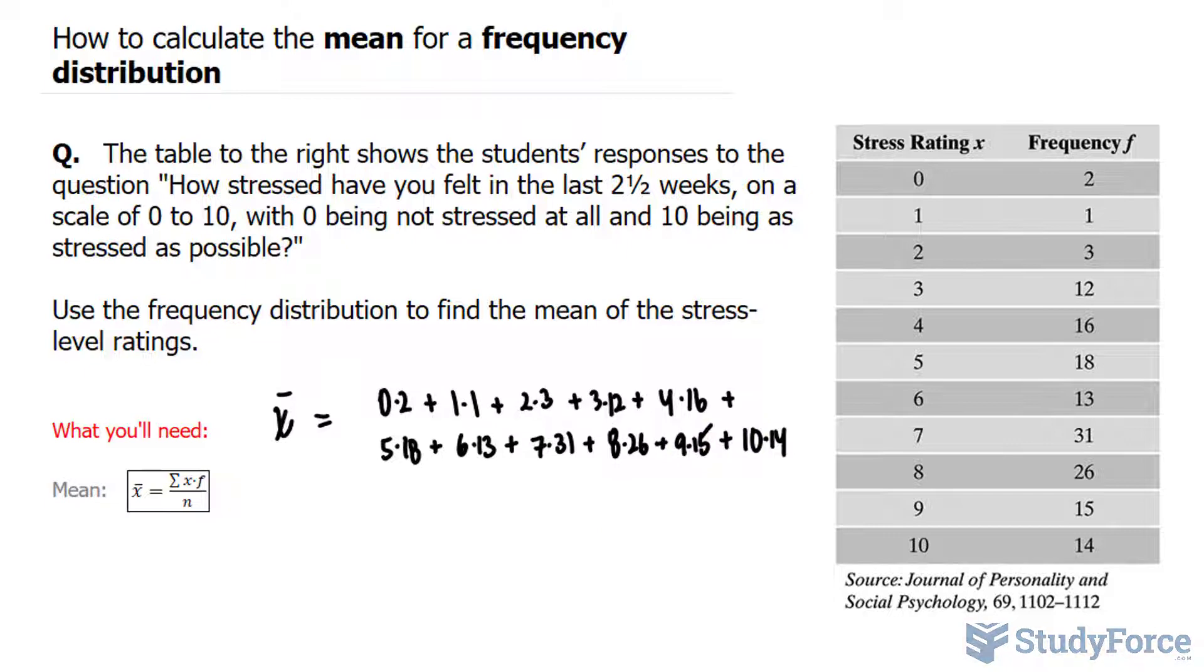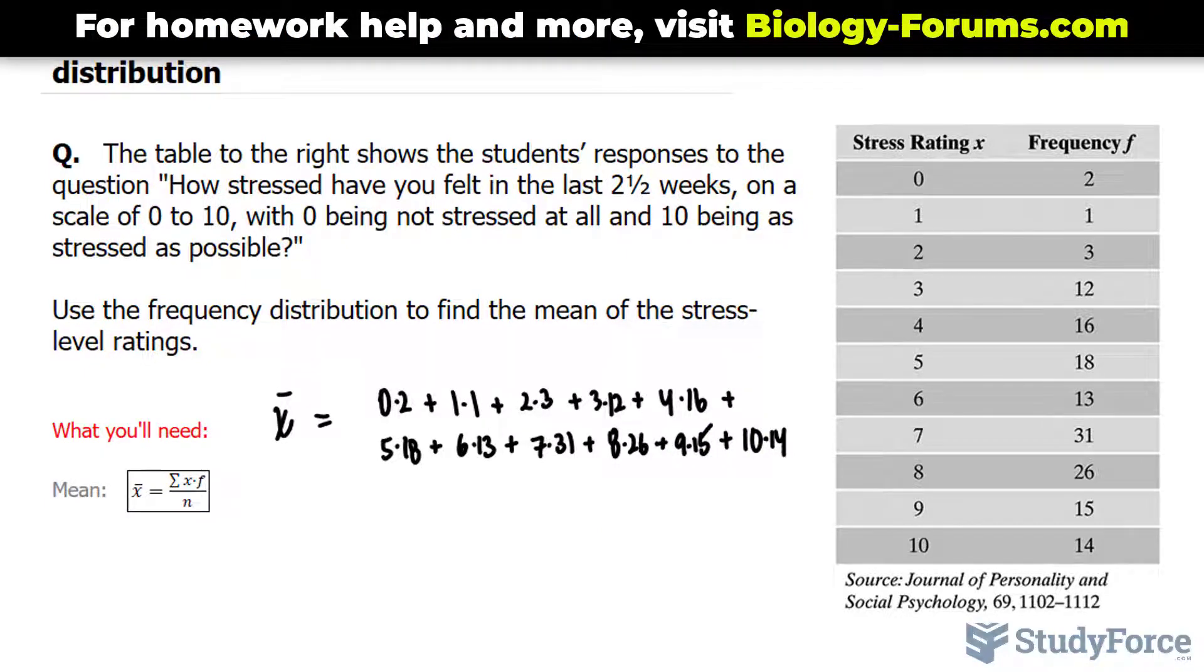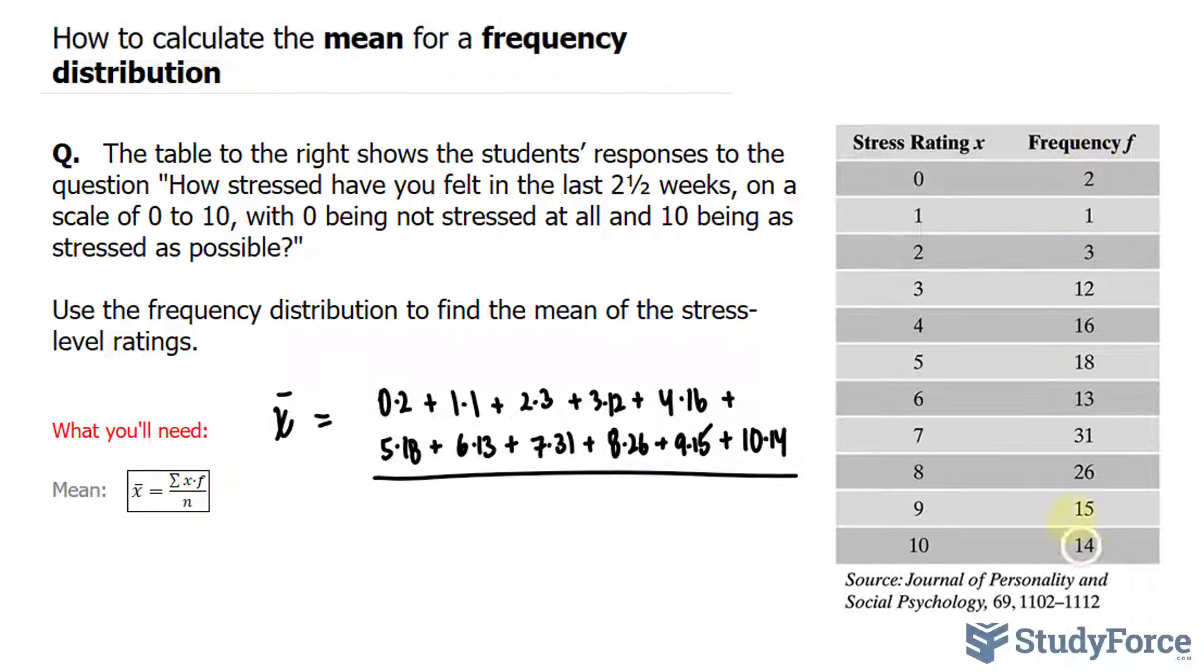Now that we're done with that, the next thing you do is divide this by the value of n. To find n, you have to sum up every number in the frequency column: 2 + 1 + 3 + 12, all the way to 14. If you do this correctly, your n value should be 151, which is the total number of people surveyed.